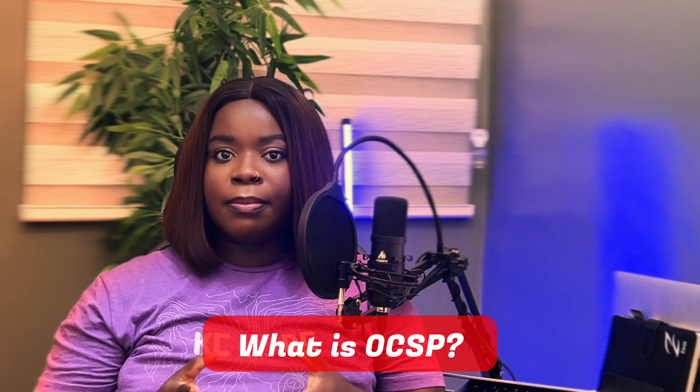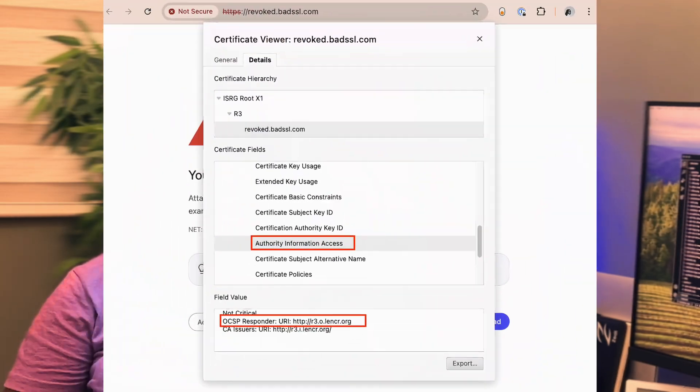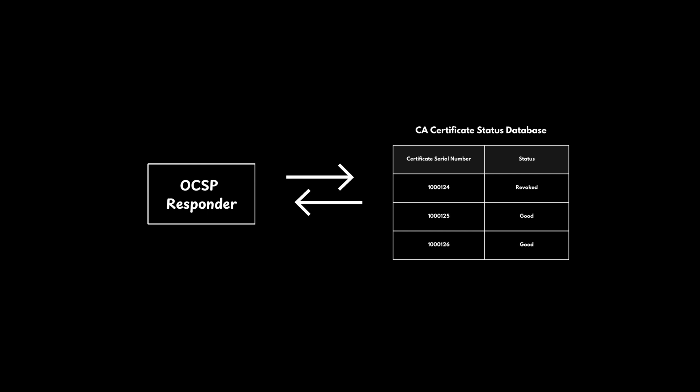OCSP offers a real-time method of retrieving the revocation status of a specific certificate from the issuing CA. If a certificate authority supports OCSP, an OCSP responder URL is included in the certificate details under the authority information access field. For example, here is the OCSP URL for a revoked certificate. The OCSP responder has access to the CA database which tracks the status of all certificates issued by a CA using their serial numbers.